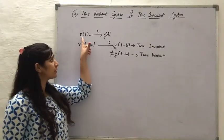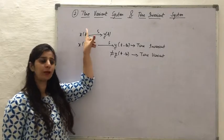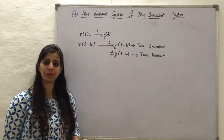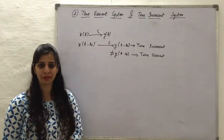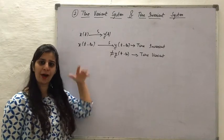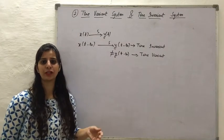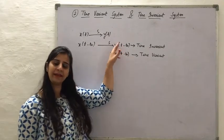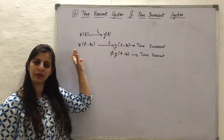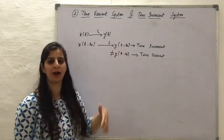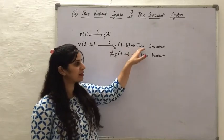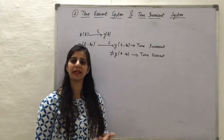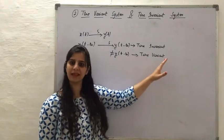Suppose we have an input signal x(t) which when applied to the system gives the output y(t). If this input signal is delayed by a certain amount of time t0, then the output we should get should also be delayed by the same amount of time. If the delay in the input signal is producing the same amount of delay in the output signal, then that is called a time invariant system. If we are getting a different result, then it is a time variant system.